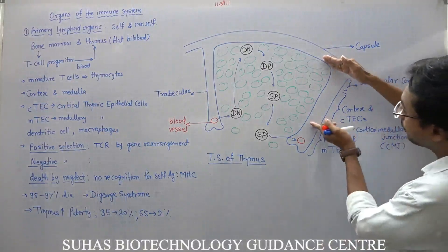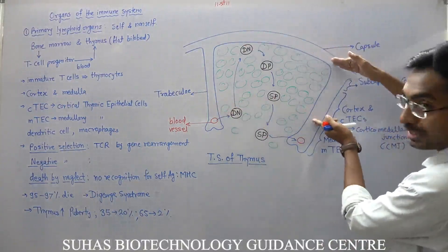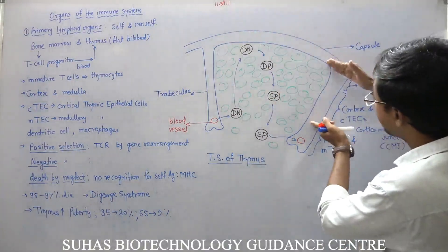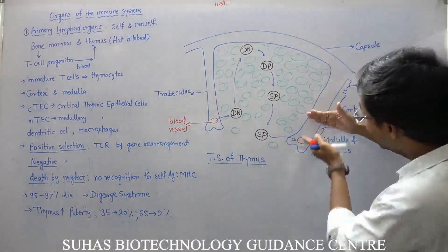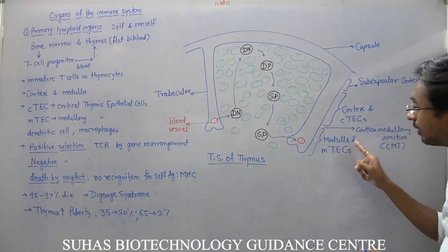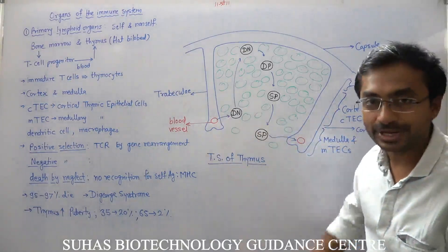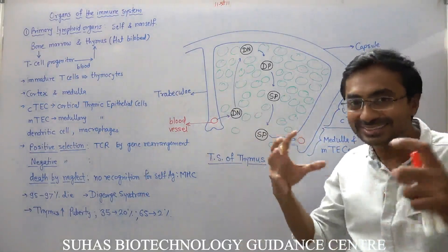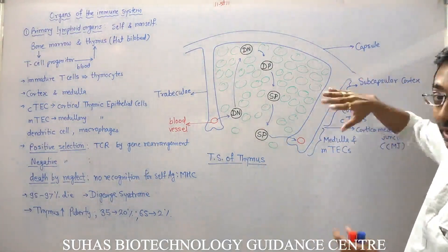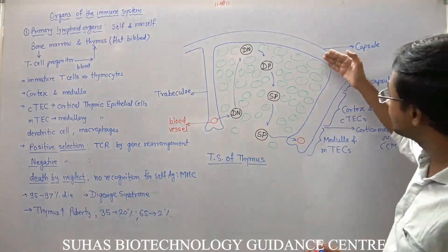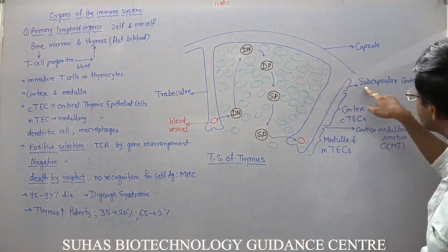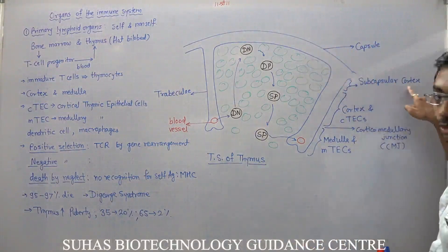This outer portion is called cortex and you can see it is densely populated, while the inside area is medulla — the medulla is sparsely populated, not very dense. The region just below the capsule is called subcapsular cortex.